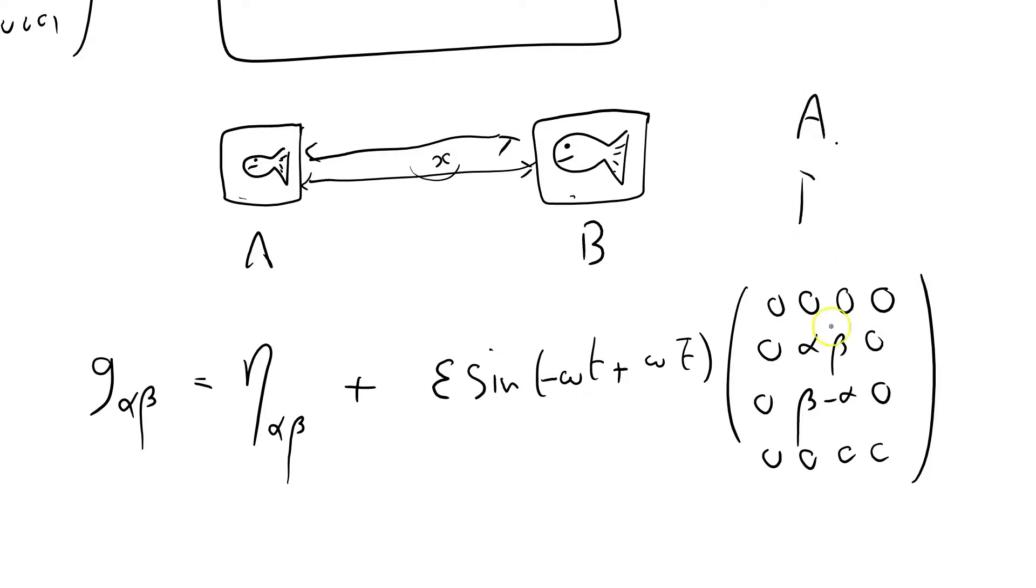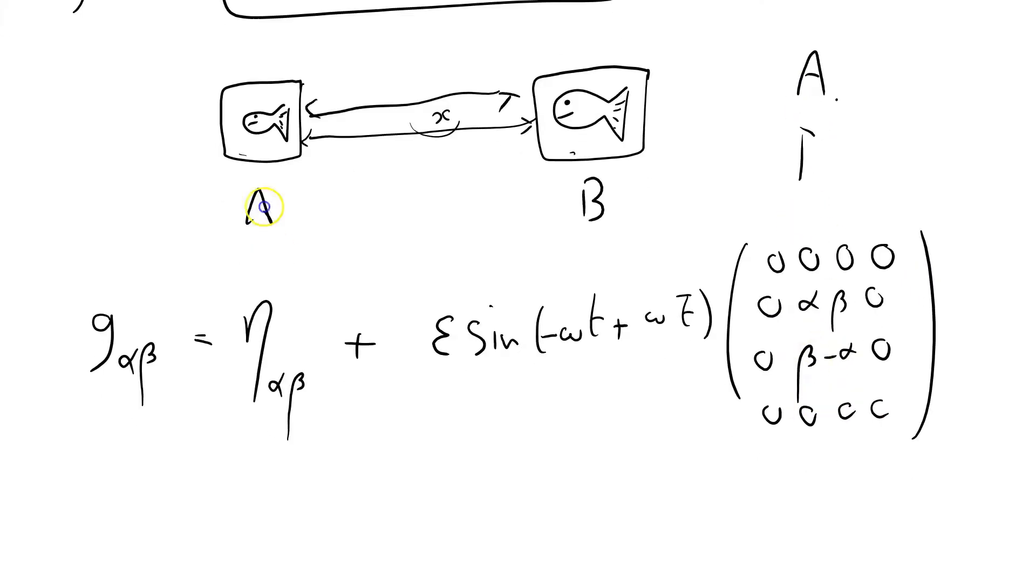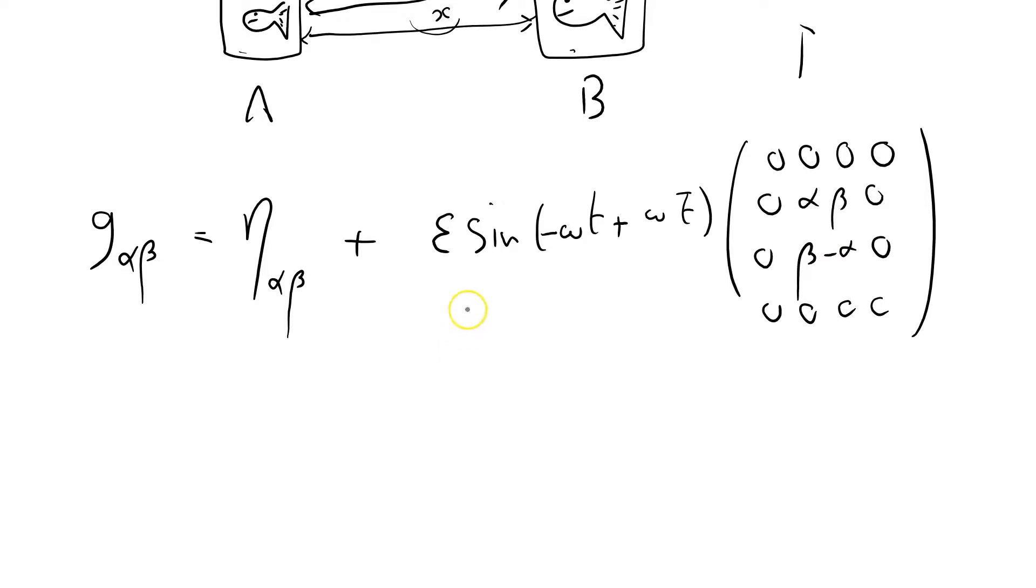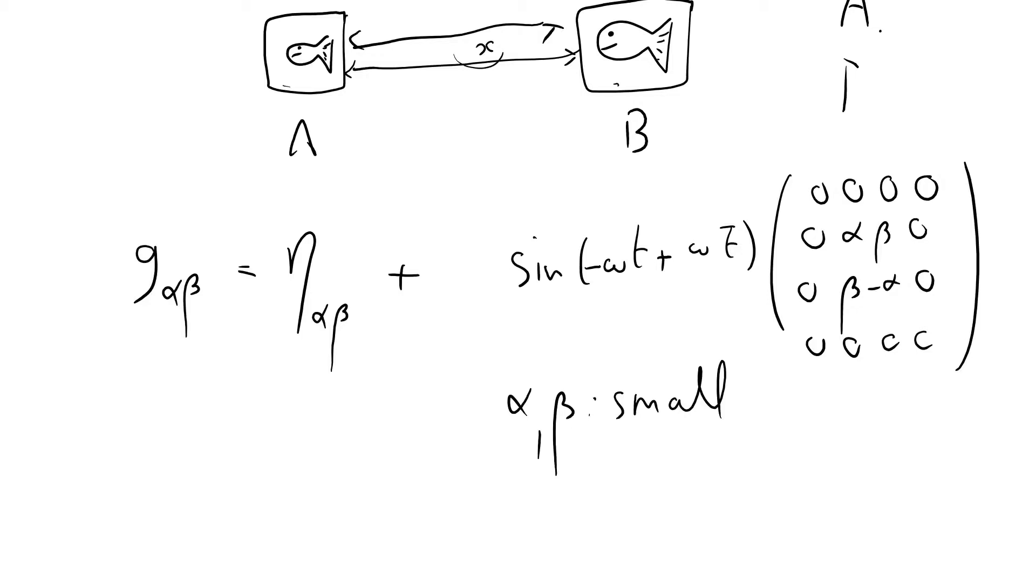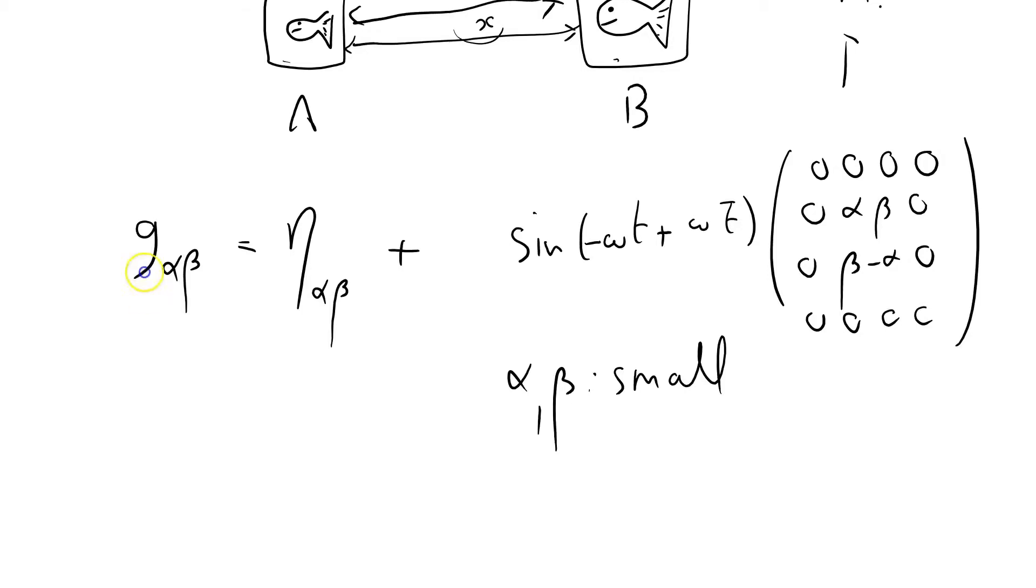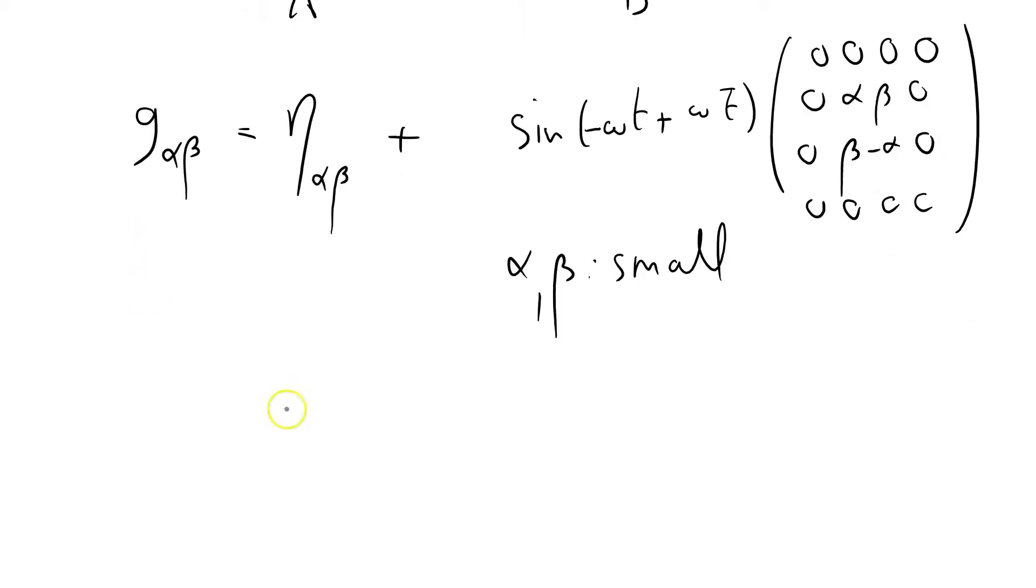This thing I've called A. So you see I've got the two polarizations. I'm going to ignore that epsilon as well. I was going to say epsilon is small, but I'm going to replace that condition with alpha and beta are small.